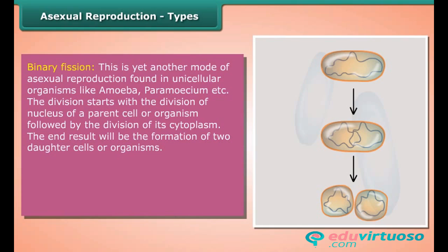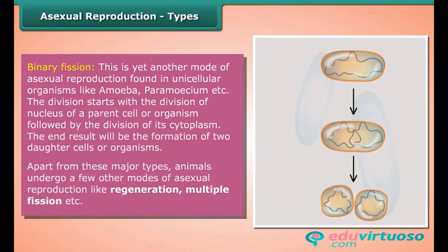Binary fission is another mode of asexual reproduction found in unicellular organisms like amoeba and paramecium. The division starts with the division of the nucleus of the parent cell, followed by the division of its cytoplasm; the end result is the formation of two daughter cells or organisms. Apart from these major types, animals also undergo other modes of asexual reproduction such as regeneration and multiple fission.